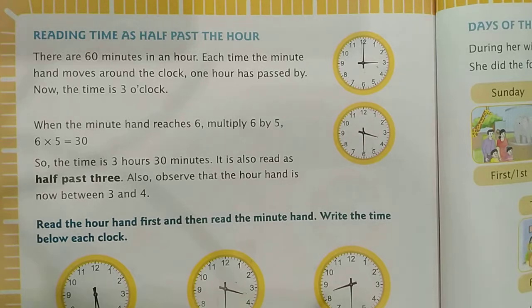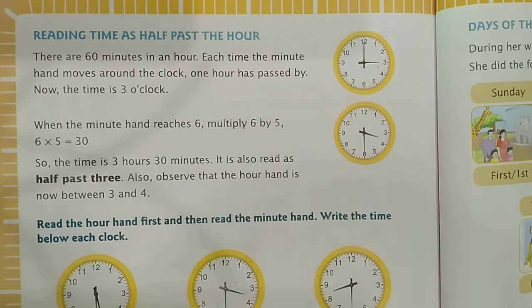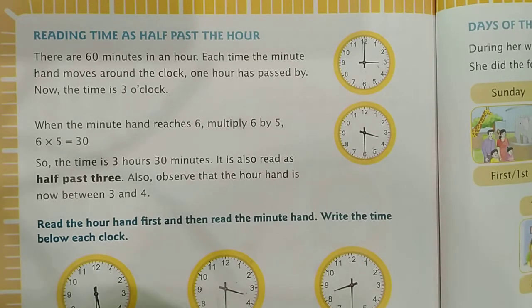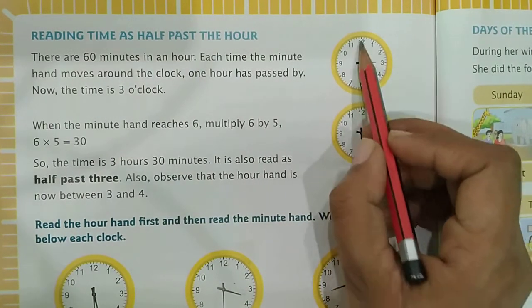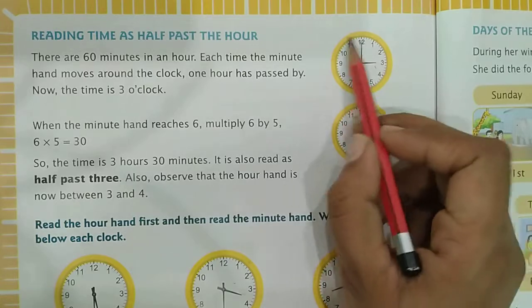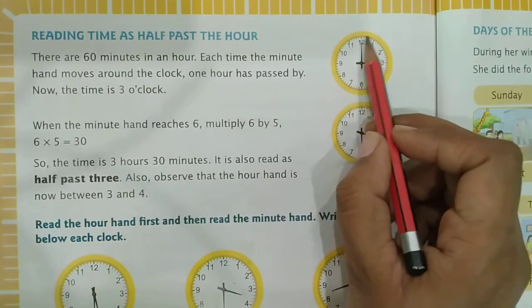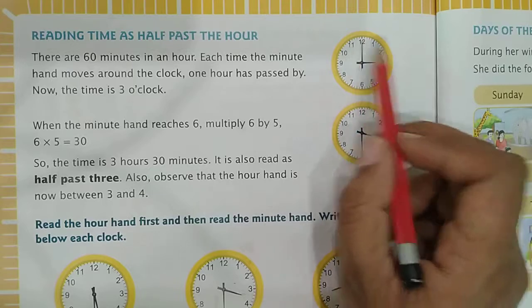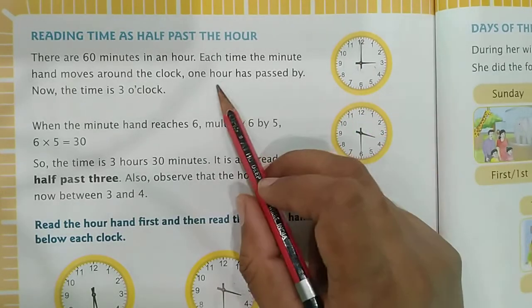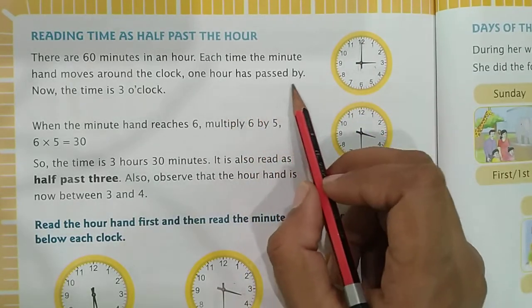Next is reading time as half past the hour. So bachay, you know very well there are 60 minutes in an hour. Each time the minute hand moves around the clock, one hour has passed by.